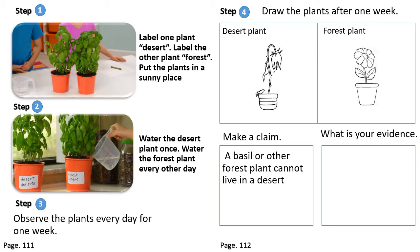For the third box, we are going to make a claim. We will write that a basil, like the example we used in the experiment, or other forest plants, cannot live in a desert because it would not get enough water — and that's why the plant wilted when watered only once. For the fourth box, we are going to draw a wilted plant, because the plant wilted because it didn't get enough water.